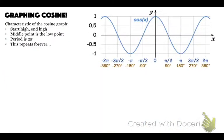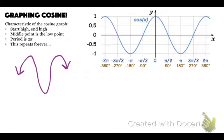The characteristics of cosine: you start high, you end high, and the middle point is a low point. Period is two pi, and this repeats forever. A student once told me it looks like ovaries — so if that helps you remember it, whatever works.